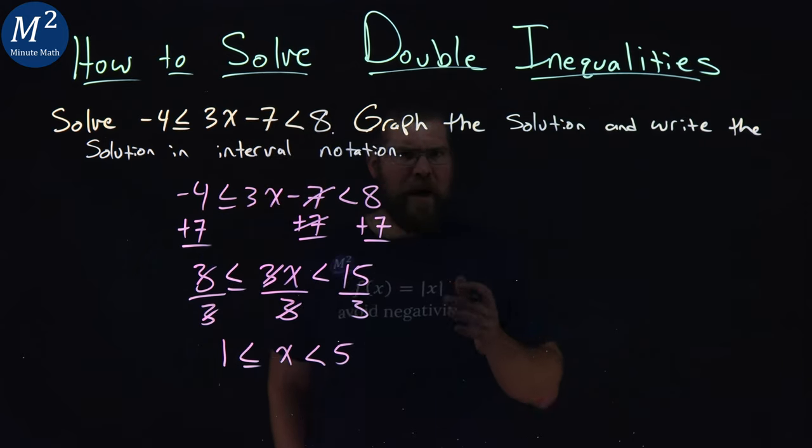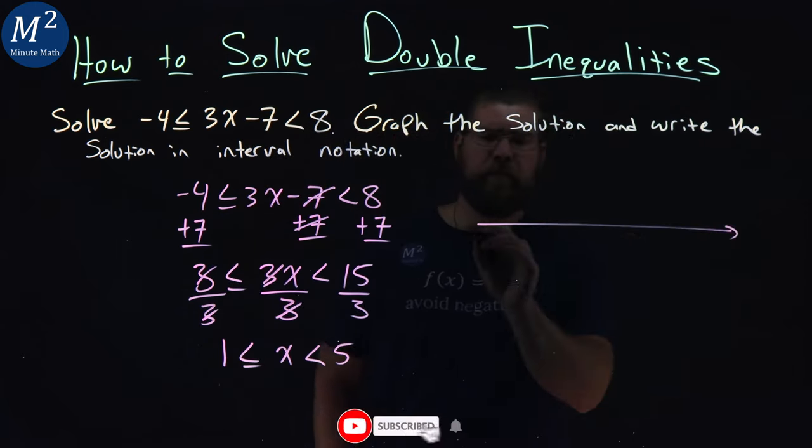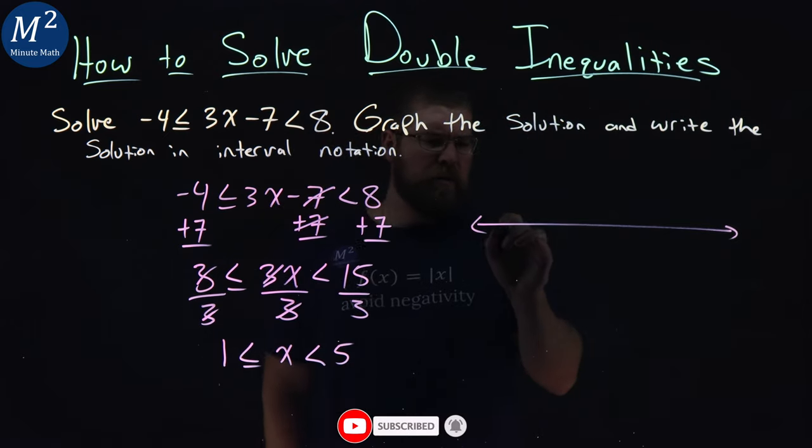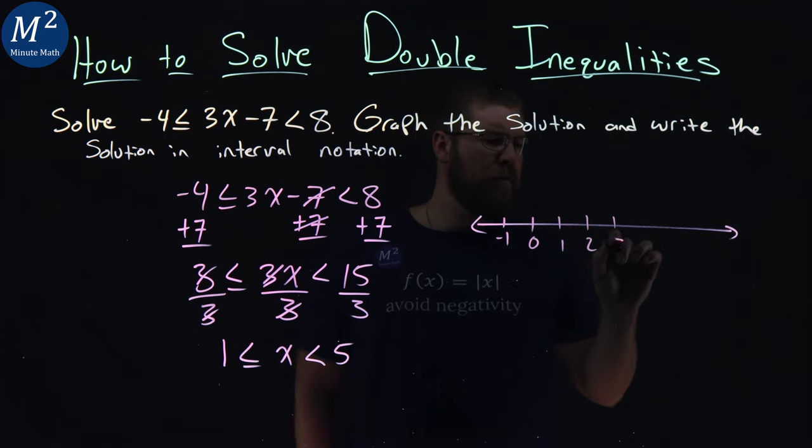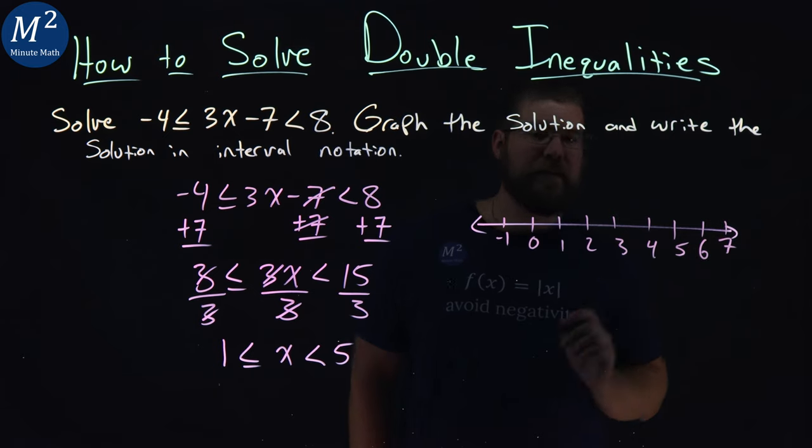So now we want to graph this inequality. Let's look at a number line here. We're ranging from one to five here. So let's start with negative one, zero, one, two, three, four, five, six, and seven.